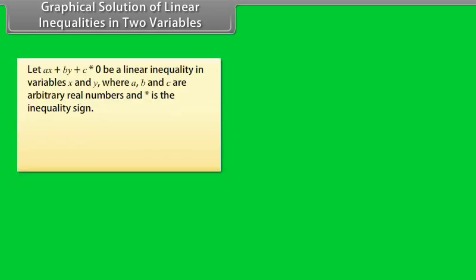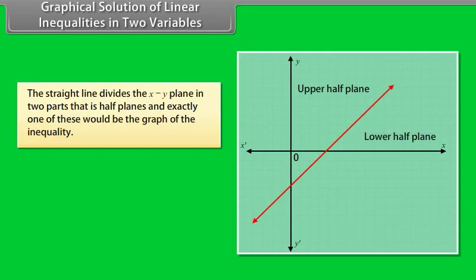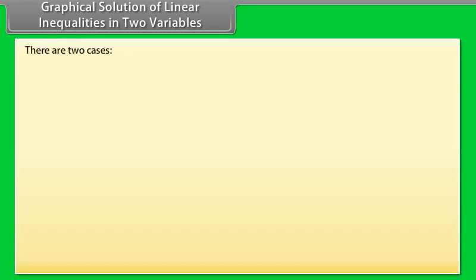Graphical solution of linear inequalities in two variables. Let Ax + By + C ⋆ 0 be a linear inequality in variables x and y, where A, B, and C are arbitrary real numbers and ⋆ is the inequality sign. The linear equation Ax + By + C = 0 plots as a straight line in the xy-plane, which divides the xy-plane into two half-planes. The graph of a linear inequality is a half-plane determined by the linear equation. To decide which half-plane is the solution, we take an arbitrary point P(h, k). There are two cases.